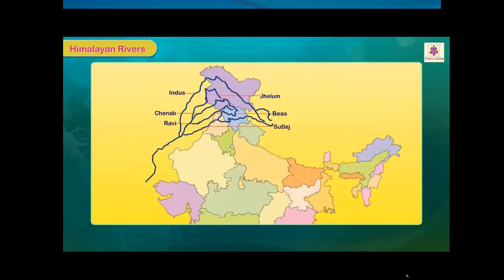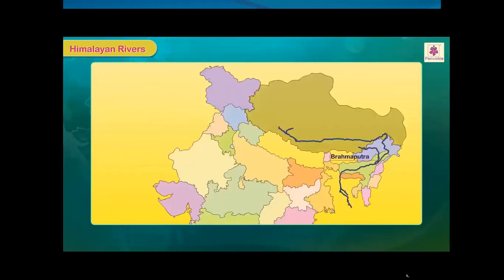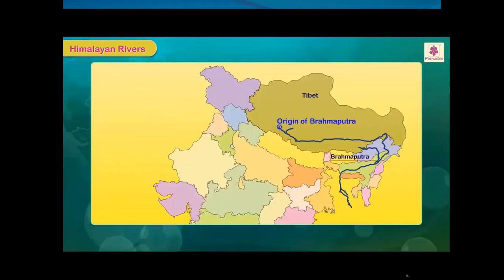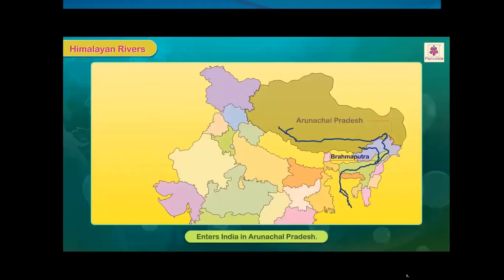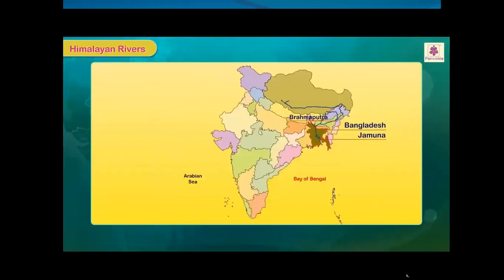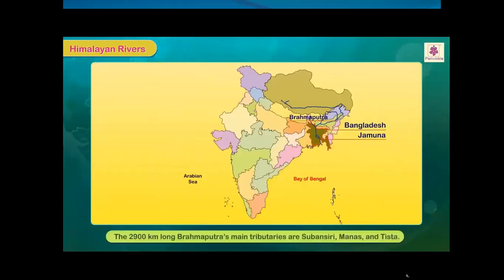The Brahmaputra also originates in Tibet near Mansarovar Lake and is known as Tsangpo in Tibet. It enters India in Arunachal Pradesh where it is known as Dihang. It passes through Bangladesh as Jamuna and meets the Bay of Bengal. The 2,900 km long Brahmaputra's main tributaries are Subansiri, Manas and Lohit.